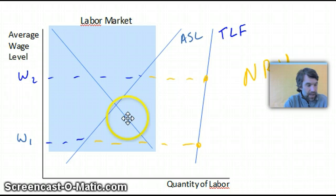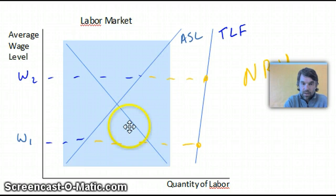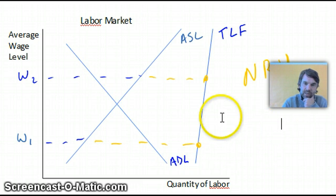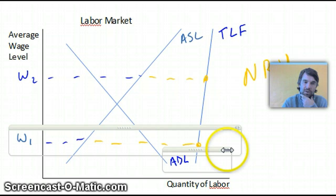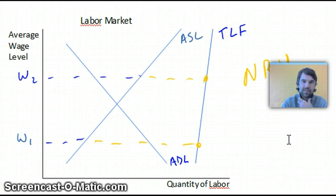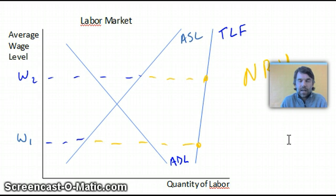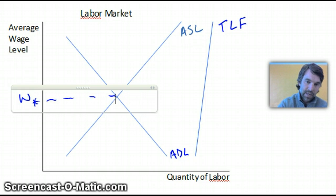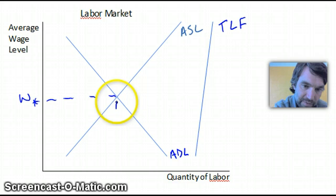Lastly, we're going to bring in Aggregate Demand for Labor — ADL. When we draw this, we're never going to draw it so it touches TLF. We're certainly not going to imply there's an equilibrium at a really low price, so never draw it so that it intersects TLF — there's no real relationship between ADL and TLF. Instead, we show an equilibrium between ADL and ASL, which produces an average wage and a certain quantity of labor.